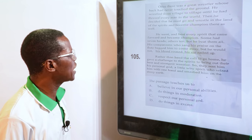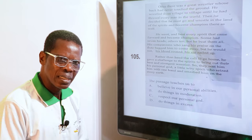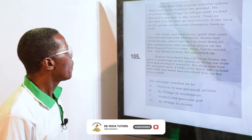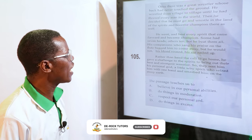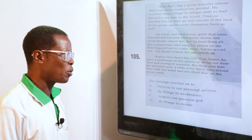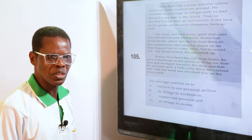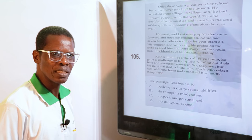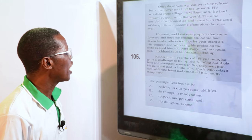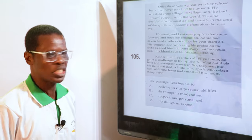The passage teaches us to — A. Believe in our personal abilities, B. Do things in moderation, C. Respect our personal God, D. Do things in excellence. He beat everybody and then challenged even spirits and demons — and his companions told him to leave but he refused. That shows we should do things in moderation. The answer is B.